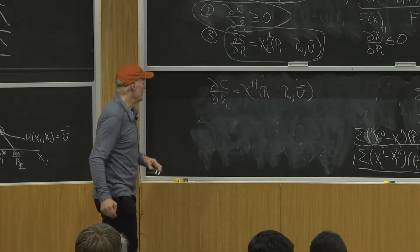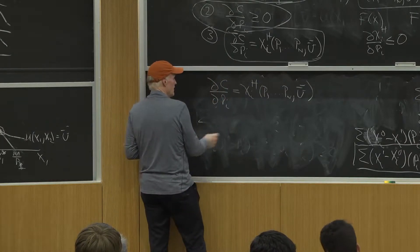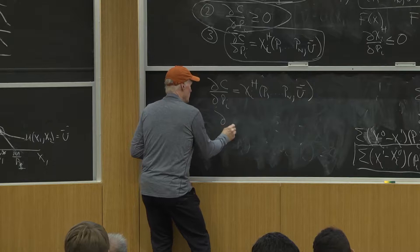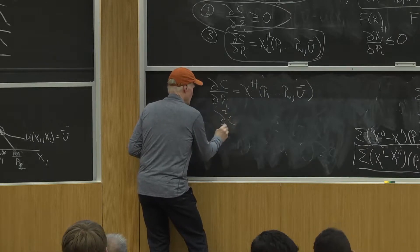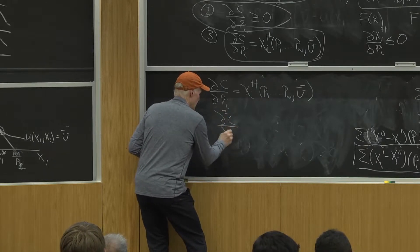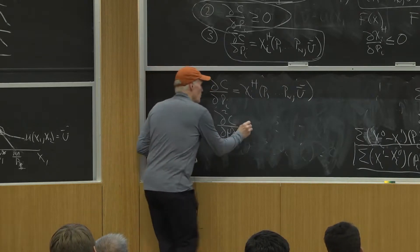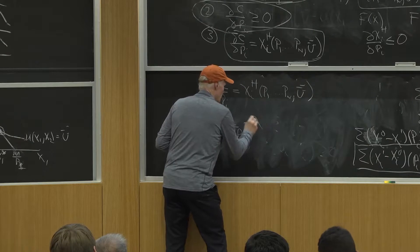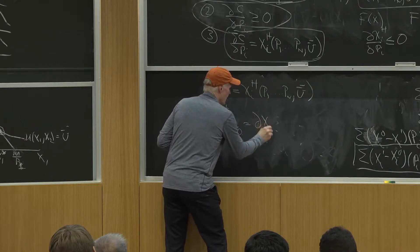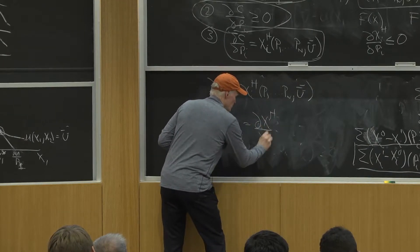we proved that. That implies the partial squared c partial pi partial pj, like that, equals partial x i h partial pj.